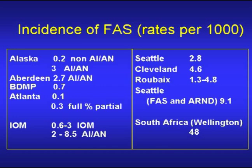AI/AN stands for American Indian/Alaska Native. Numbers on the right side are from a recent study by Sampson and others in 1997, demonstrating rates of FAS of at least 2.8 per 1000 live births in Seattle, 4.6 per 1000 in Cleveland, and between 1.3 and 4.8 per 1000 in Roubaix, France. In this study they estimate the prevalence in Seattle for FAS and ARND at 9.1 per 1000 births, meaning nearly 1 in every 100 children is affected by prenatal alcohol exposure. The last number from South Africa is from recent work done by Phil May and colleagues.